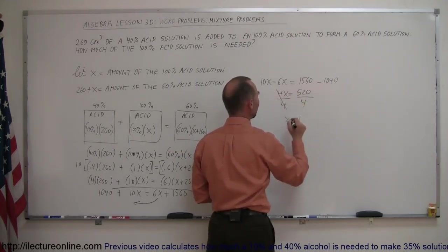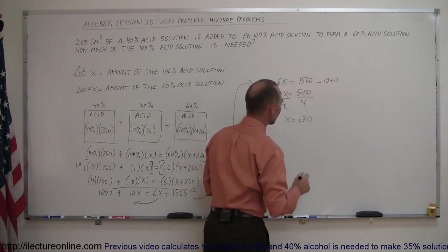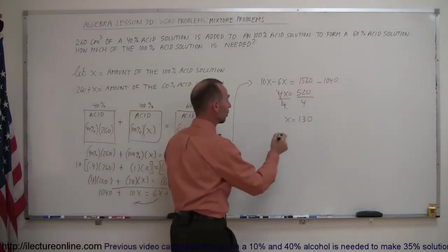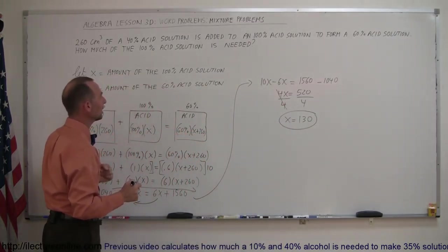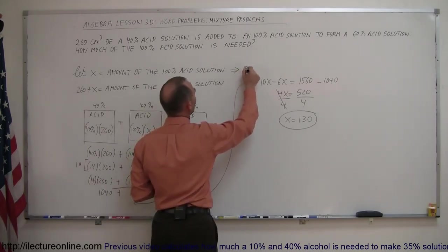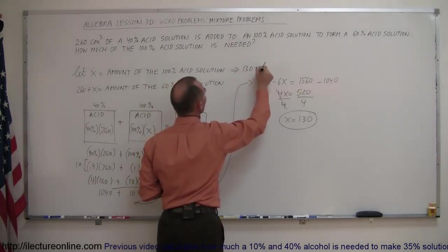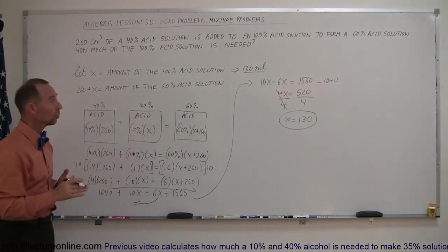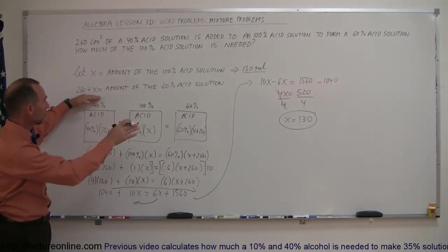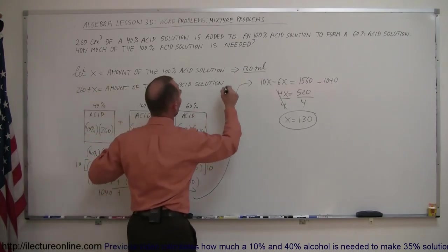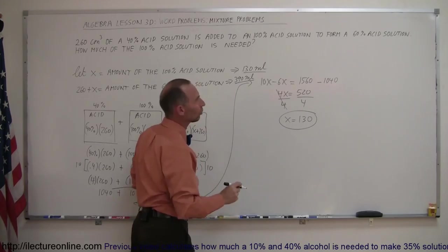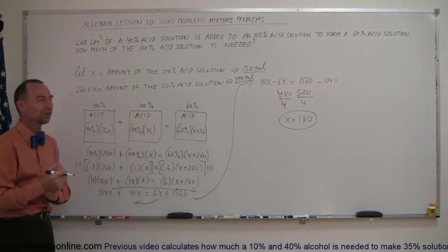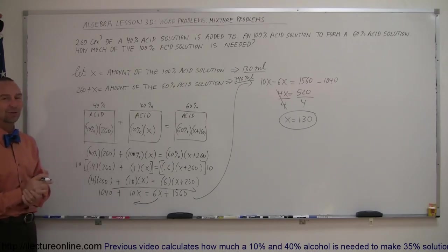So 4 goes into 5 one time, bring down the 2 that's 12, bring down the 0 that's 120. 4 goes into 520 130 times, which means by definition, since X was the amount of the 100% acid solution we needed, that means we need 130 milliliters of the 100% solution. And how much solution do we finally end up with? Well, 260 plus the 130, that means we end up with a total of 390 milliliters of the final 60% solution. They didn't specifically ask for that, but we just added it right here. And that's how you do this mixture problem.